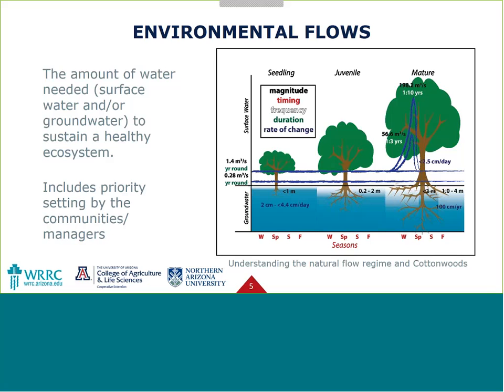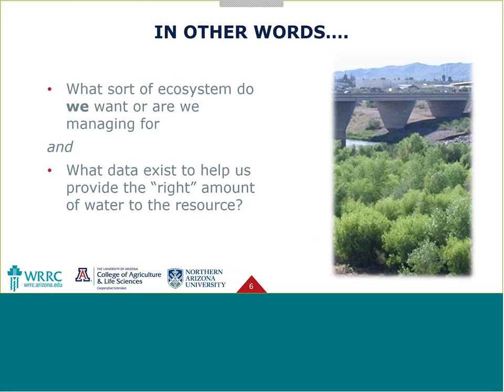One of the most difficult things about thinking about environmental flows is that it's not just the science — it's also thinking about priority setting. What sort of system are we managing for? To manage for environmental flows, we really have two questions: What sort of ecosystem do we want or are we managing for? And what data exists to help us provide the right amount of water to the resource? This database really tries to help answer that second question.